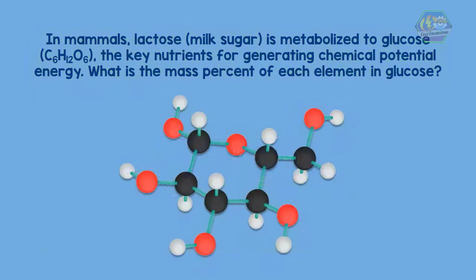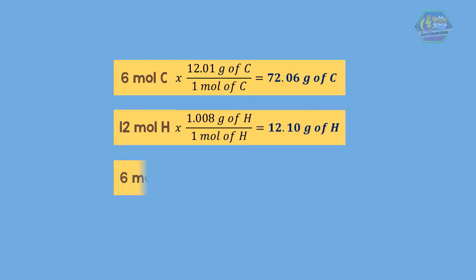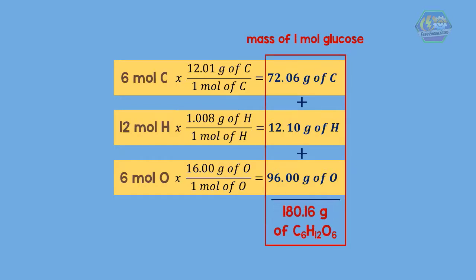Now for one mole of glucose, it contains six mole of carbon, twelve mole of hydrogen, and six mole of oxygen. For six mole of carbon, its mass is 72.06 grams. For twelve mole of hydrogen, its mass is 12.10 grams. For six mole of oxygen, its mass is 96.00 grams. Now the mass of one mole of glucose is 180.16 grams.